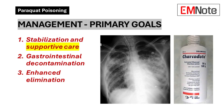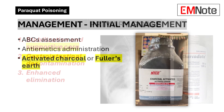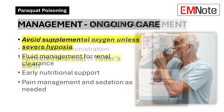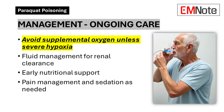Management principles. Paraquat poisoning management consists of three fundamental principles: immediate stabilization and supportive care, gastrointestinal decontamination, and enhanced elimination. Initial management prioritizes standard resuscitation protocols while avoiding excess oxygen supplementation due to its potential to exacerbate oxidative injury. Gastrointestinal decontamination utilizing activated charcoal or Fuller's Earth should be implemented promptly when appropriate. Ongoing care focuses on meticulous fluid management to support renal clearance while avoiding fluid overload, early initiation of nutritional support, and appropriate pain management and sedation as clinically indicated.